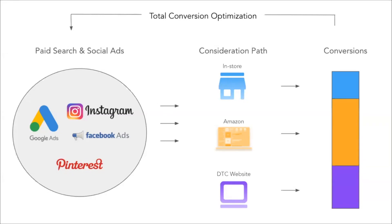I hope you learned something in this video. Don't forget that you can try Perpetua — you'll find the links below in the description. Perpetua helps automate Amazon advertising campaigns and more, so check out the software. Make sure you also watch another video with Drew from Perpetua, which was very popular and will help you learn more about Amazon advertising.